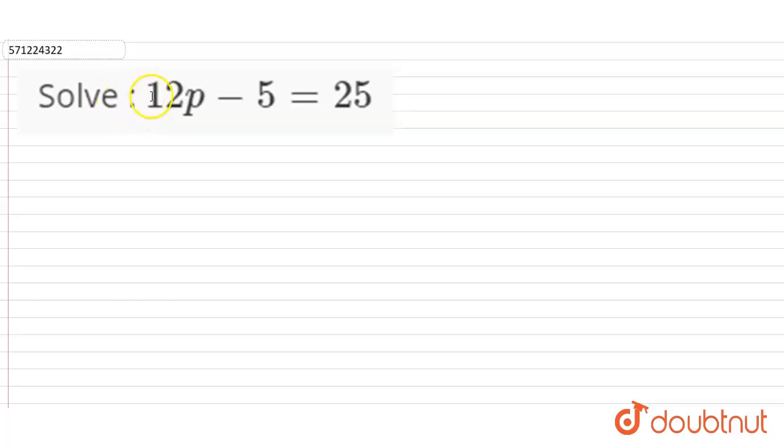Hi students, our question is solve 12p-5 is equal to 25. So 12p-5 is equal to 25.